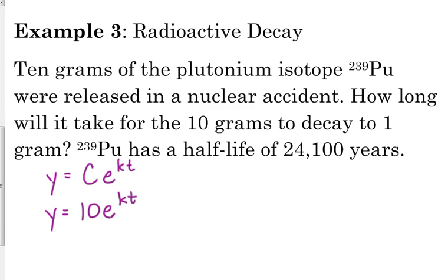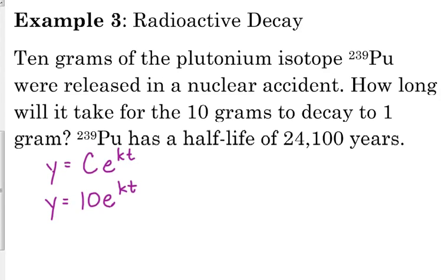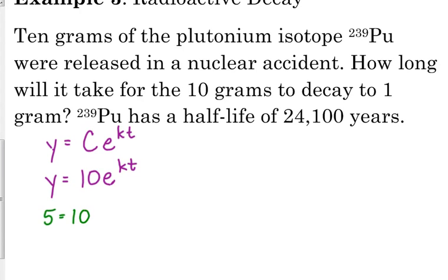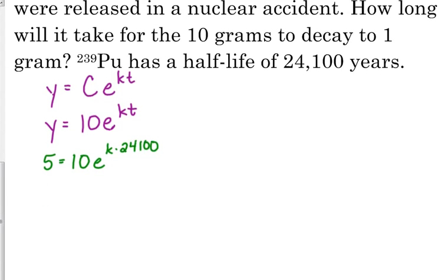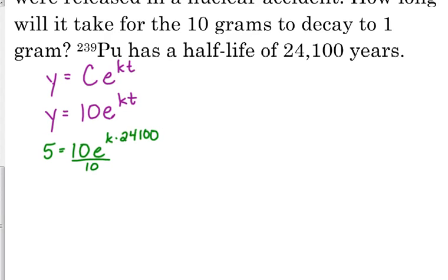So we know that much. We've got to use this half-life idea somewhere. In 24,100 years, how much of that 10 grams would be present? 5. So let's use that. 5 grams is equal to the 10 times e to the k times 24,100. This is going to allow us to solve for k. So divide by 10. 5 over 10 is 1 half. Write it in logarithmic form. The natural log of 1 half is equal to 24,100 times k. Divide by...